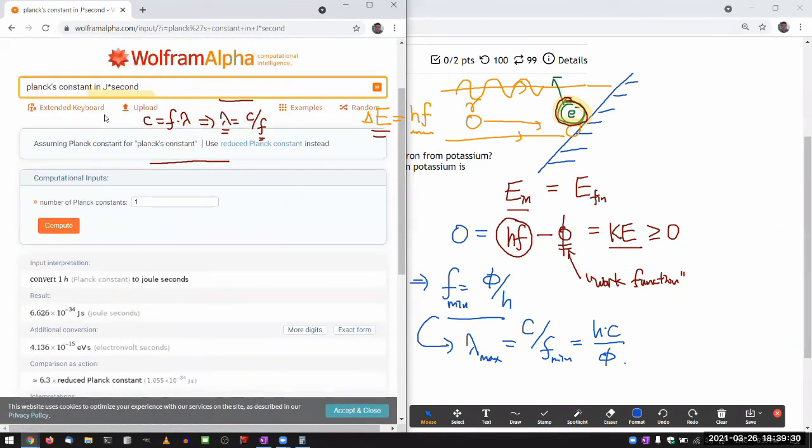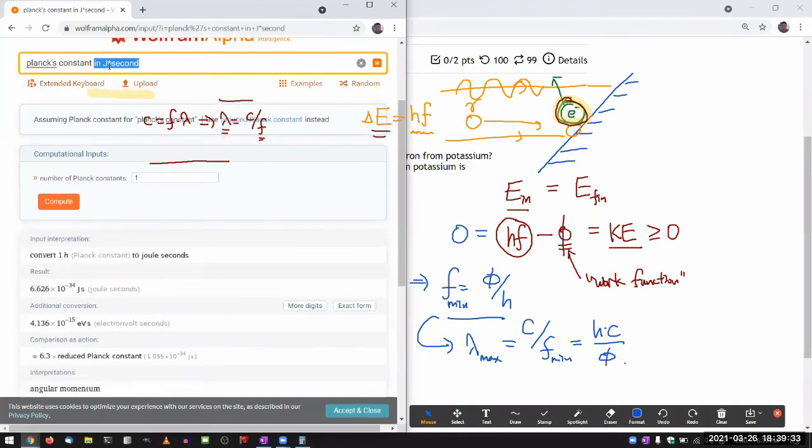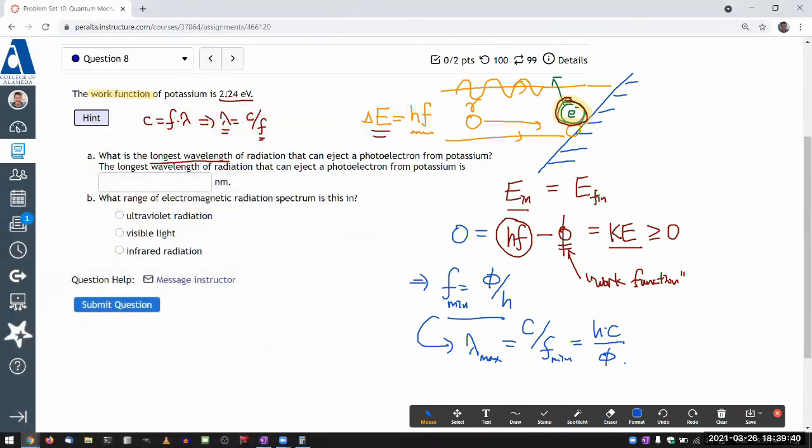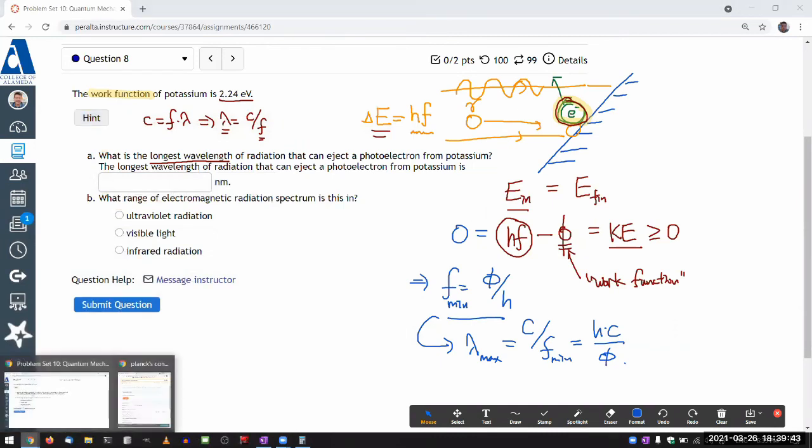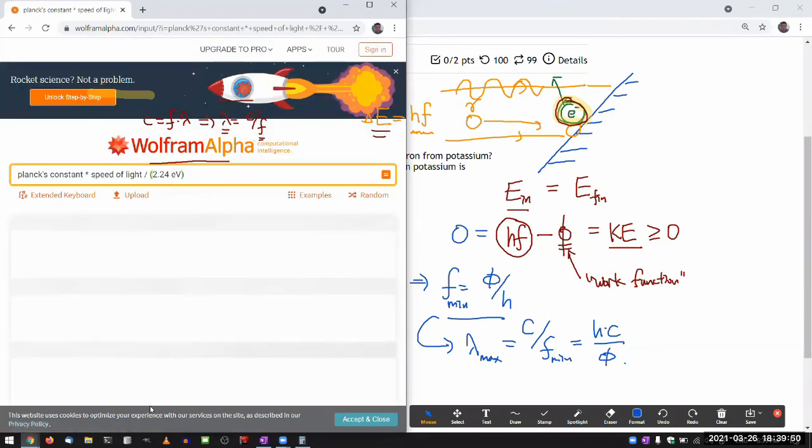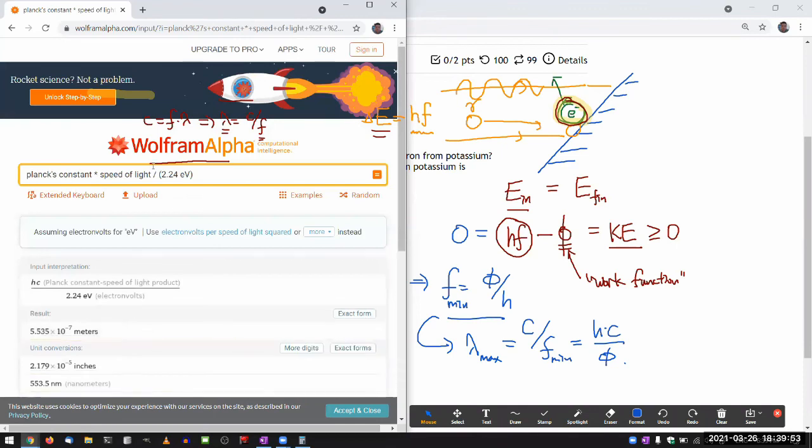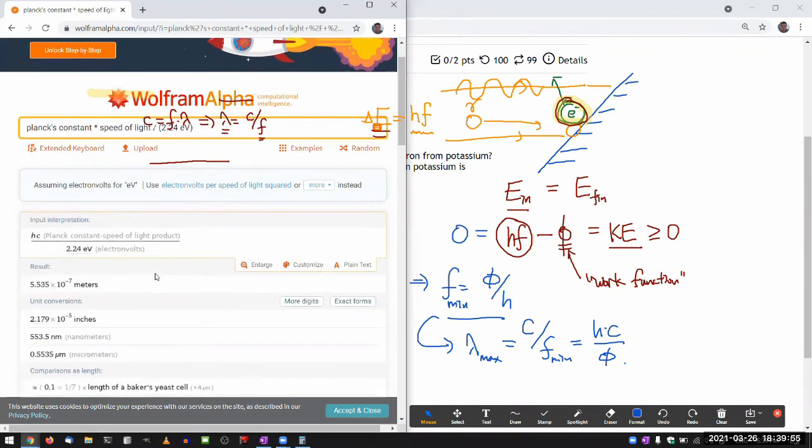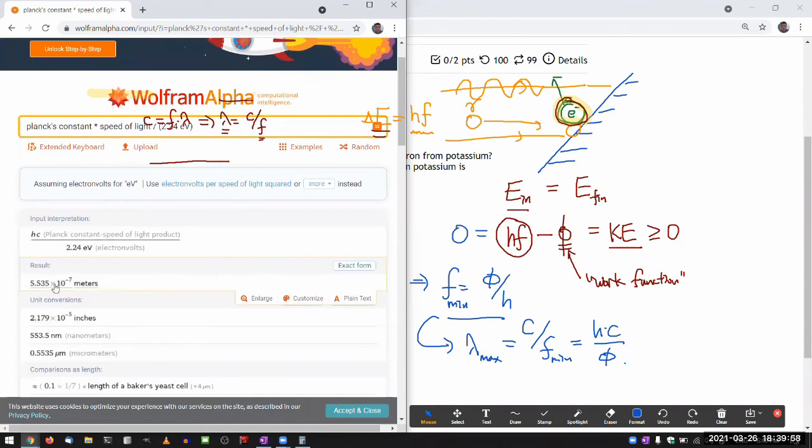Now, when you're doing the calculation on Wolfram Alpha, it kind of doesn't matter. So I'll do Planck's constant times the speed of light divided by, I don't remember what the work function was, 2.24 eV. 2.24 eV. I think it'll understand the eV. So yep, that's my longest wavelength.